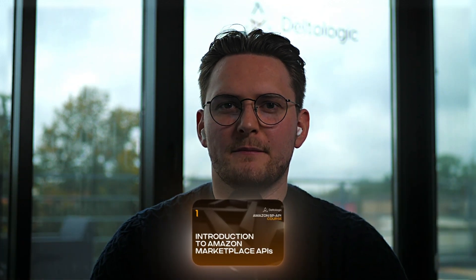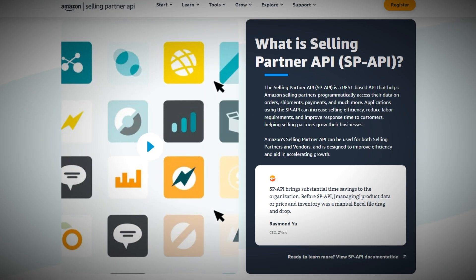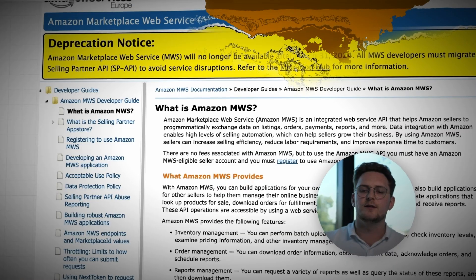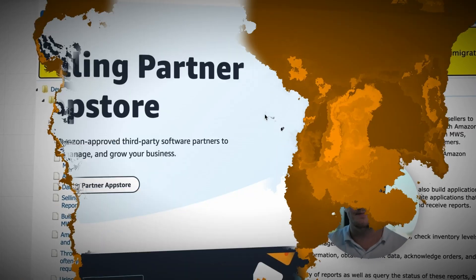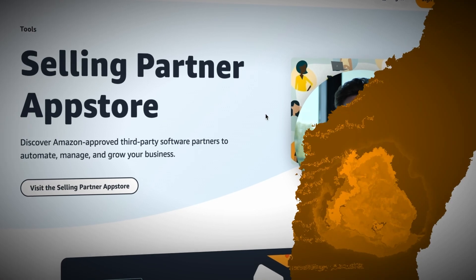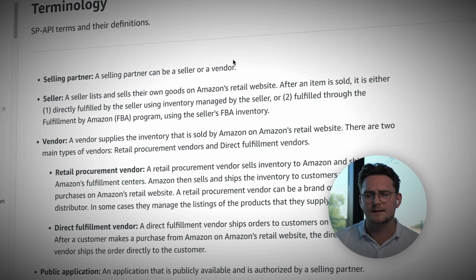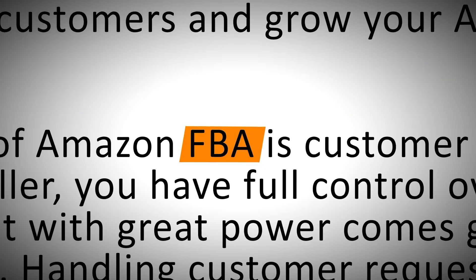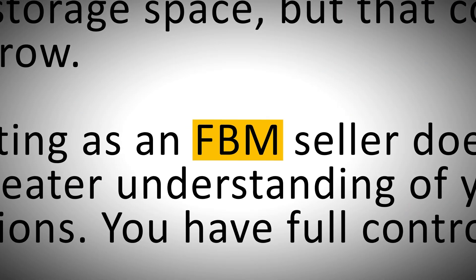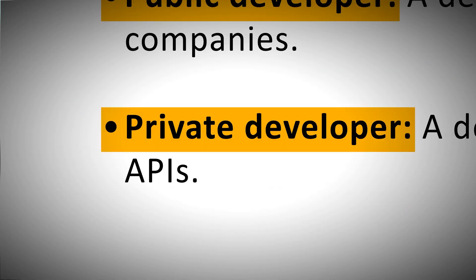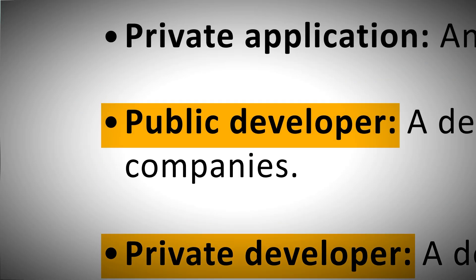The first module is all about introduction to Amazon APIs, so you'll learn about the Amazon Advertisement API, SP API, and the old MWS. You'll learn what is the Amazon App Store, understand the Amazon vocabulary such as FBA and FBM, what is a private developer, what is a public developer, and I'll also teach you how to get access to the PII.